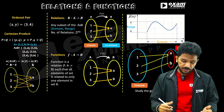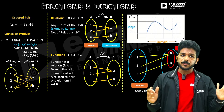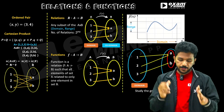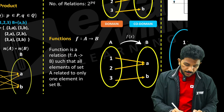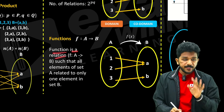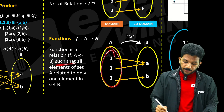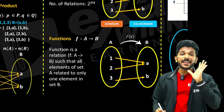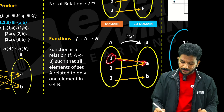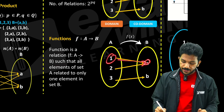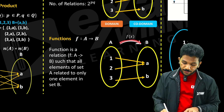There are many relations. A function is a relation such that all elements of the domain have one and only one image. There is an image, and if you have an image, you can see the function.